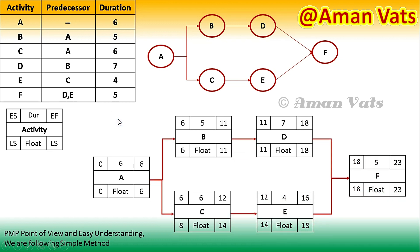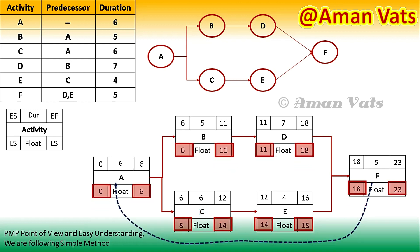I hope you are well aware of how to create this diagram. In my previous video we calculated early start and early finish using the forward pass method, and now we will be calculating late start and late finish using the backward pass method. As a recap: 6 is the duration of the first activity, so starting from 0, 6 plus 0 equals 6. Then 6 plus 5 equals 11, and 11 plus 7 equals 18 — 18 has come here.